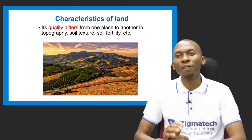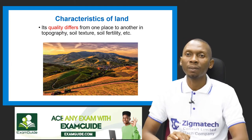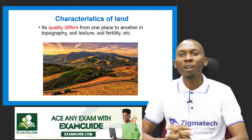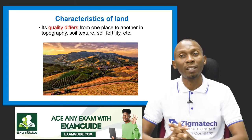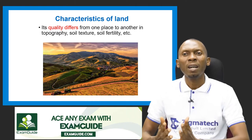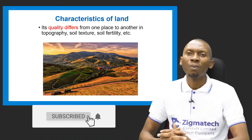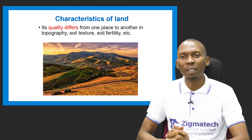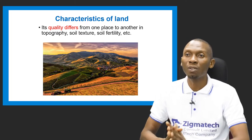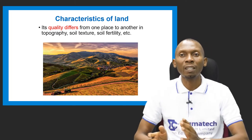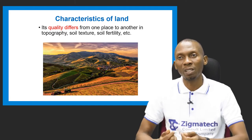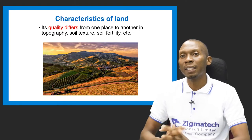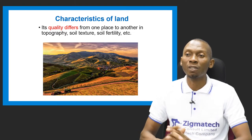The quality of land differs from one place to another. Factors like topography, soil texture, and soil fertility determine the quality of land in a particular location. Good topography and fertile soil increase land quality, while poor texture and low nutrient content reduce it.